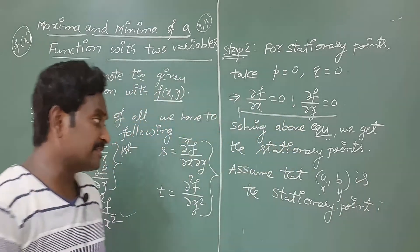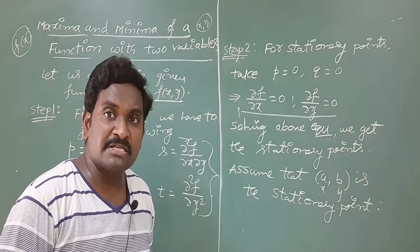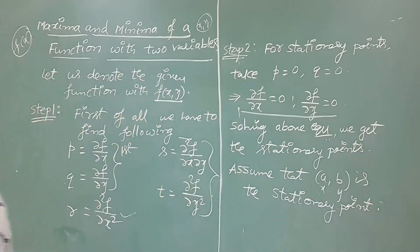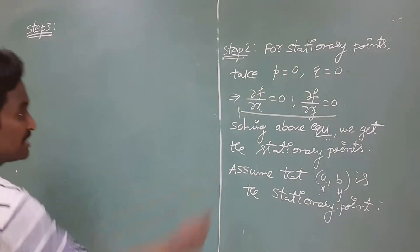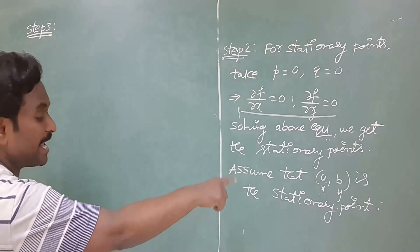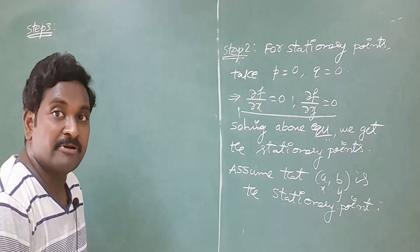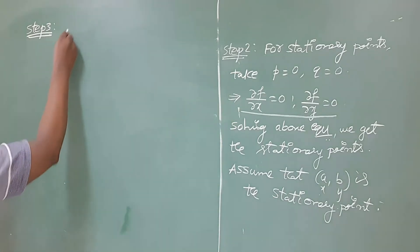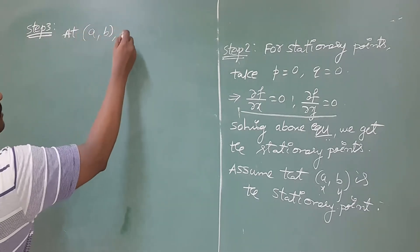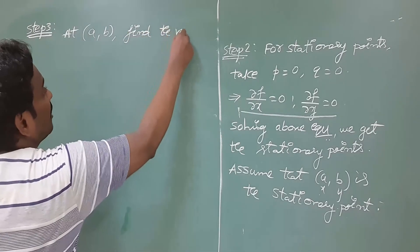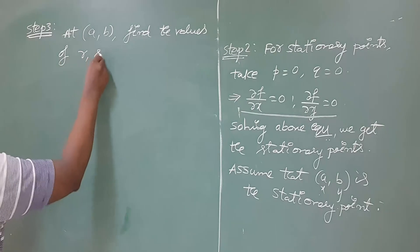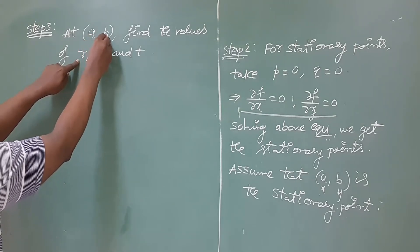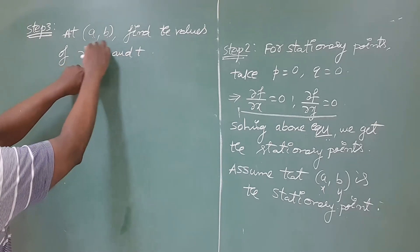Now we have to check whether the given function has a maximum or minimum at this stationary point. For that purpose we check some conditions. After getting the stationary point (a, b), substitute it into the second order partial derivatives r, s, and t. At stationary point (a, b), find the values of r, s, and t — meaning wherever you have x replace it by a, and wherever you have y replace it by b. Similarly find s and t at the stationary point.